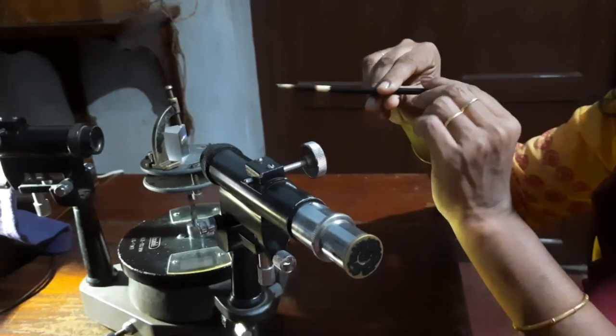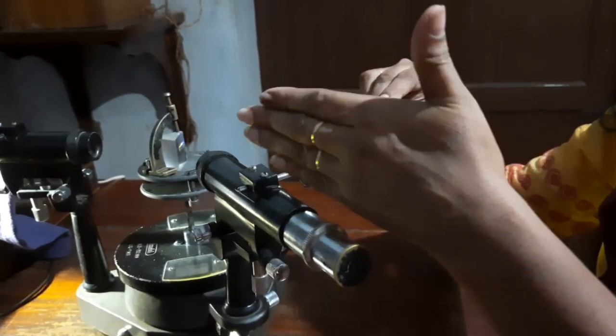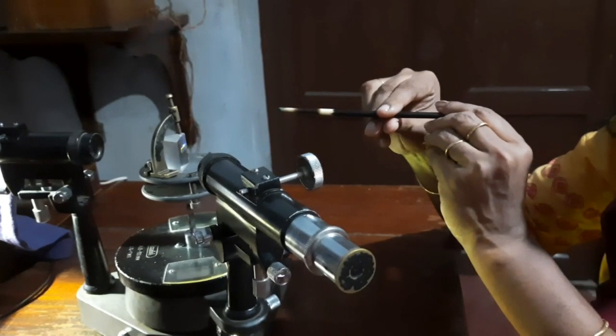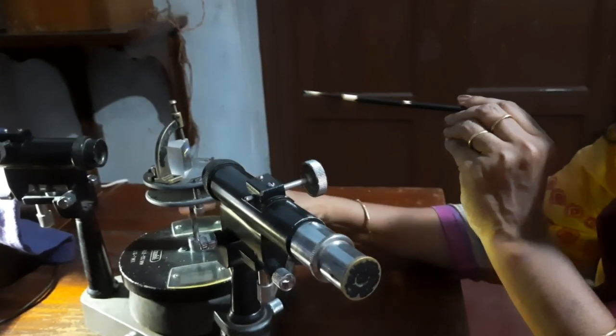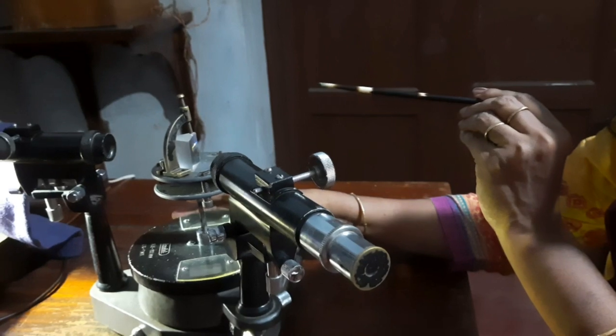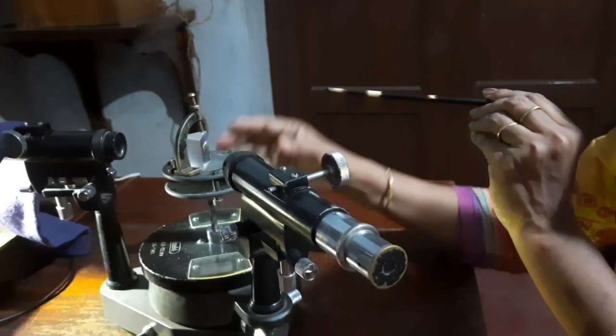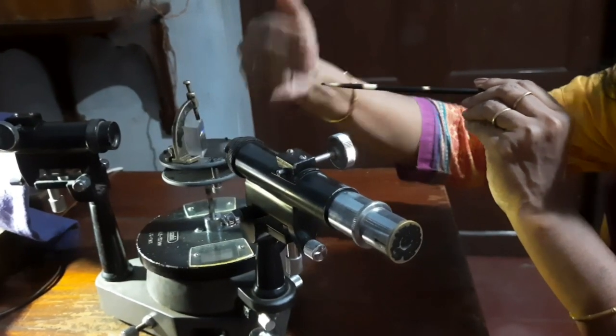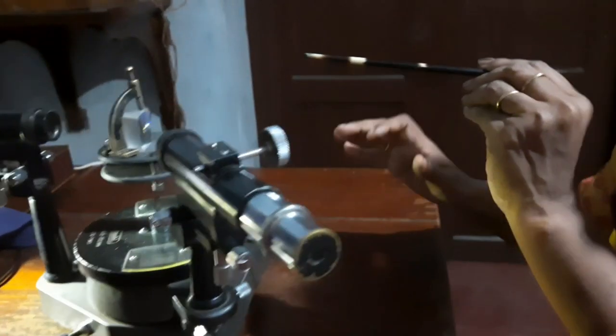That is you should get your refracted image closer to the direct image. So with that aim in mind, rotate the Vernier table in such a way that the violet image moves towards the direct. So observe this violet blue region or violet line. Violet ray moves towards the right side that is towards the direct. Now the violet light is moving towards the right.